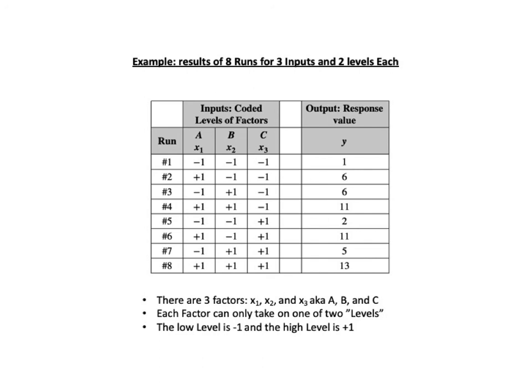And there are two levels. Negative 1 represents the low level for each factor, and plus 1 represents the high level. We call these coded levels. These coded levels fill up columns 2, 3, and 4 on the left side of the table. And at the far right, we have the output variable Y. Y is also called the response. The measured value for Y in each of the eight experimental runs is shown in the rightmost column.